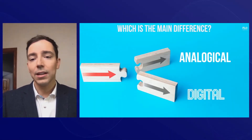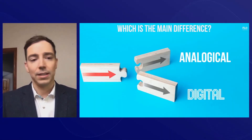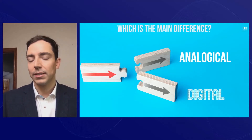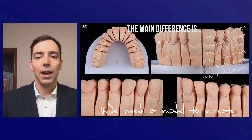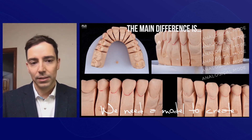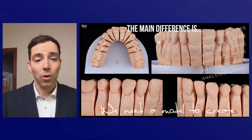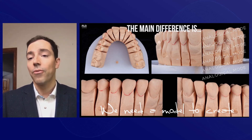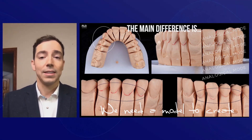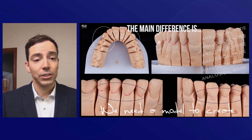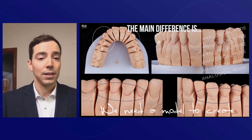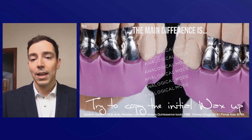Let me show you the main difference between the analogical way of making veneers and the digital way. In the analogical mode, the first and most important difference is that we need a physical model to create our final restorations. Also, the margin localization is decided by our technician, not by us — and I think this is a wrong process.